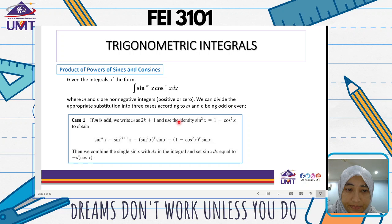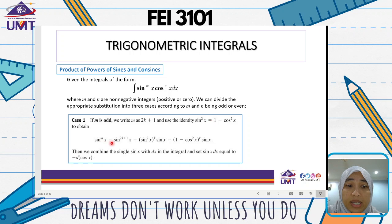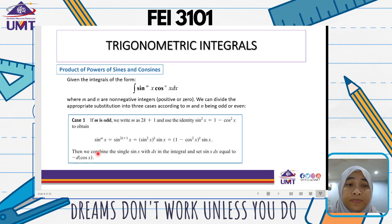Case 1: if m is odd, we write m as 2k plus 1 and use the identity sine squared x equals 1 minus cos squared x, to obtain sine to the power of m equals sine to the power of 2k plus 1, which equals sine squared x to the power of k times sine x, which is equal to 1 minus cos squared x to the power of k times sine x. Then we combine the single sine x with dx and set sine x dx equals negative d(cos x).